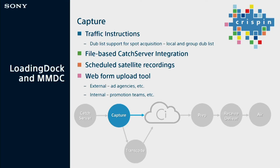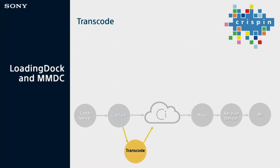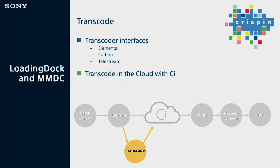Once we've integrated to the catch server and captured that content, we need to transcode it. Your transcoder can be any of your transcoders of choice: Elemental, Carbon, Telestream — whatever file formats you're dictating for your own station group. We also have the option to transcode in the cloud with Sony C. At this point, you've got your content in the format you're looking for. Maybe you've pushed it to the cloud to transcode in C, maybe it's still all local on-prem. But now we need to prep this content.